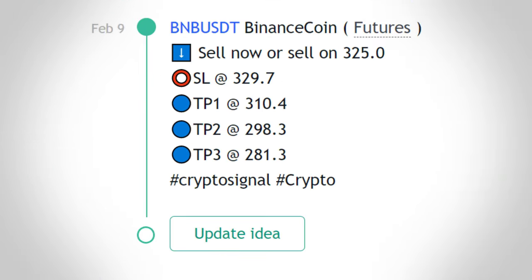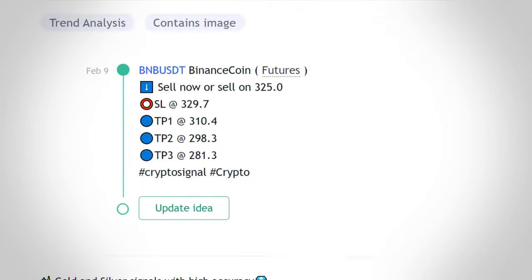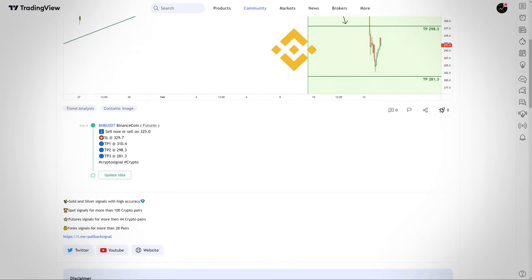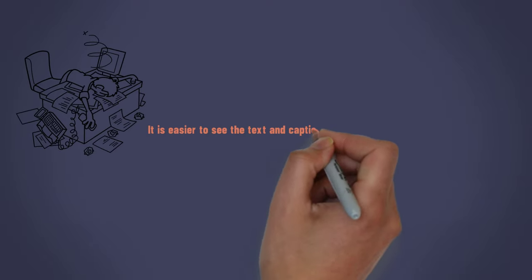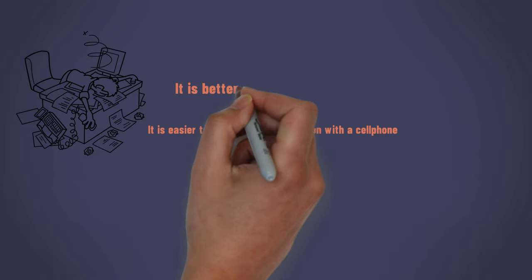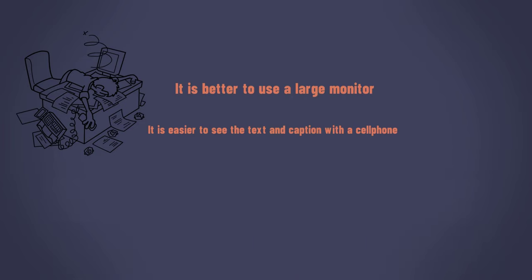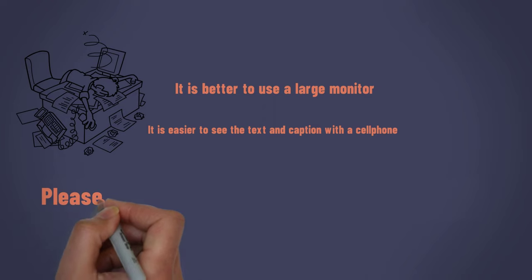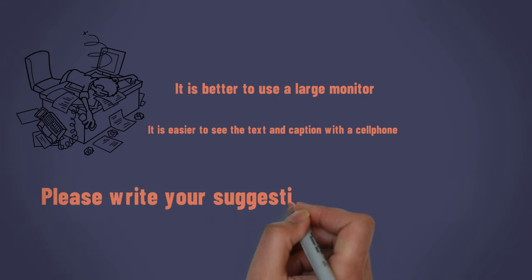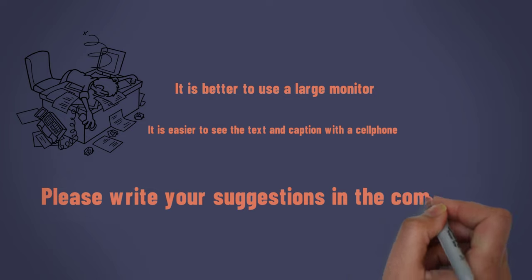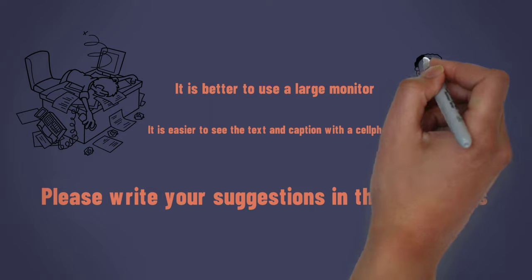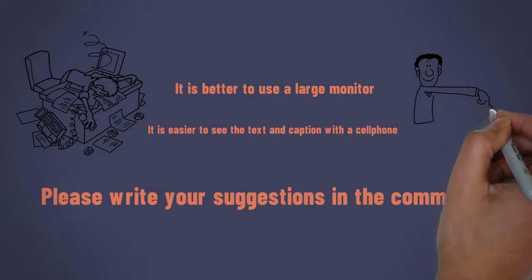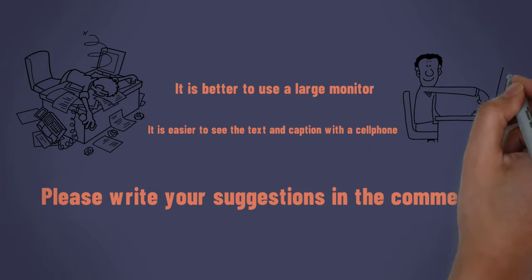The same text as in the signal is written in the description. We offer these different methods for your convenience because we do not know under what conditions and with what device you use our services. So by seeing the caption, the text, or the link, you can find out all the details. If you have any suggestions, please write them in the comment section. In the next video we will answer all your questions, so please write any questions you have related to our signals and the market in the comment section.